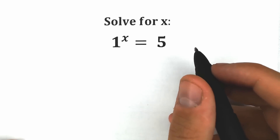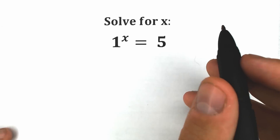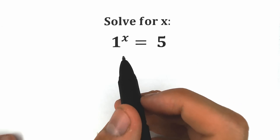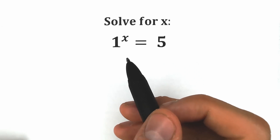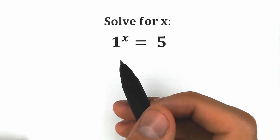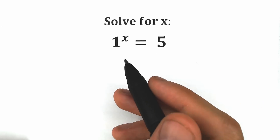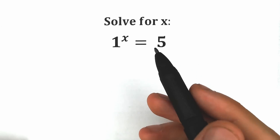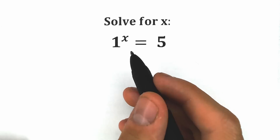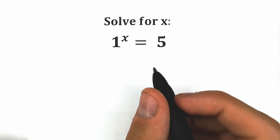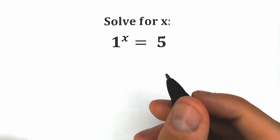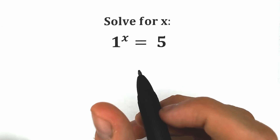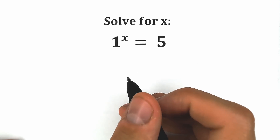Hello everyone, happy to see you here. Today we have a really interesting and maybe the trickiest challenge you've ever seen: 1 to the x equals 5. A lot of students might be saying, hey, this is not possible — 1 to the x equals 1 all the time. How is it possible that 1 to the x equals 5? A lot of students are confused about this, and in this video I'm going to show you really great things about this challenge.